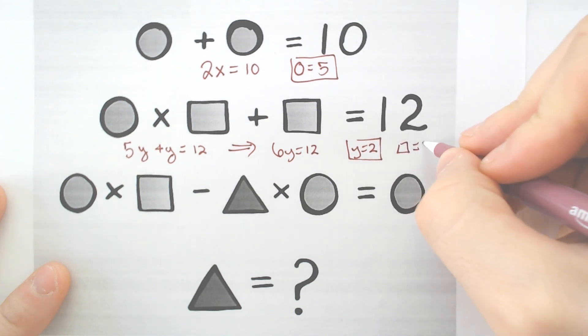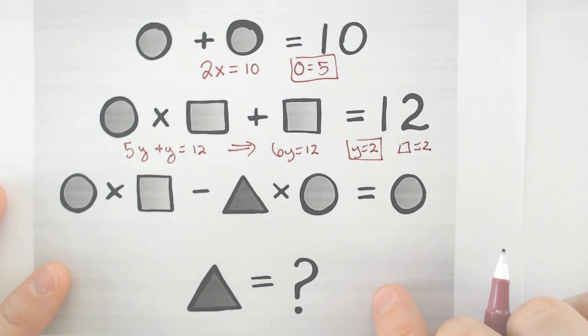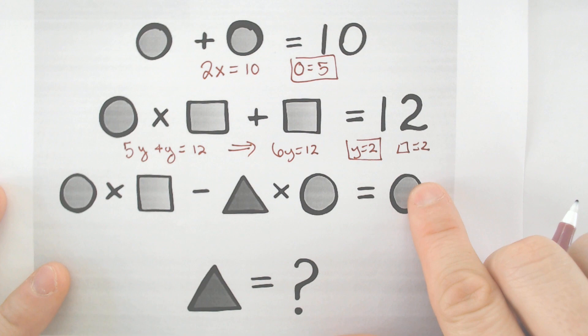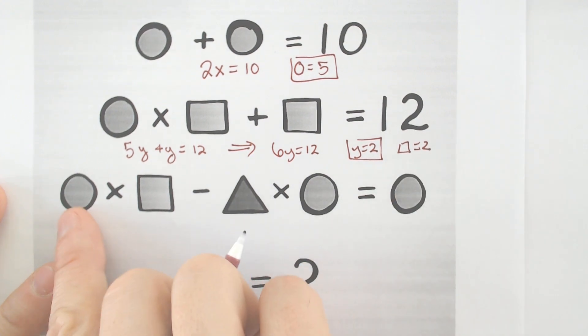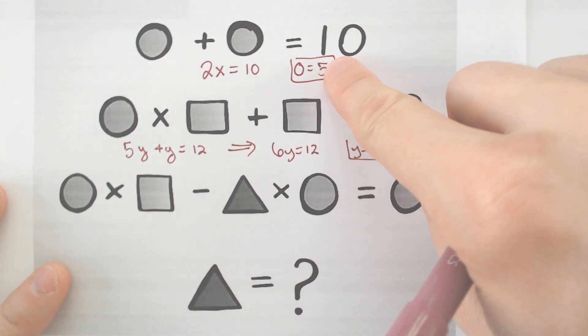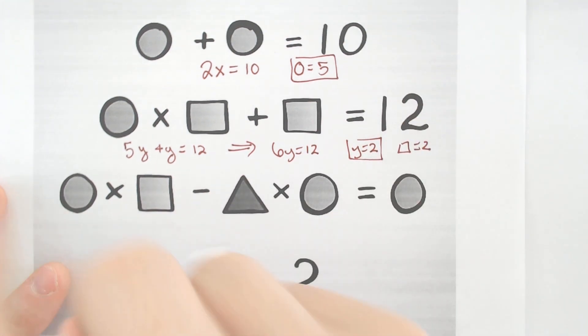So our square is equal to 2. All right, and now we can substitute some things in again. So we have a circle times a square. Well, a circle is 5 and a square is 2, so 5 times 2.